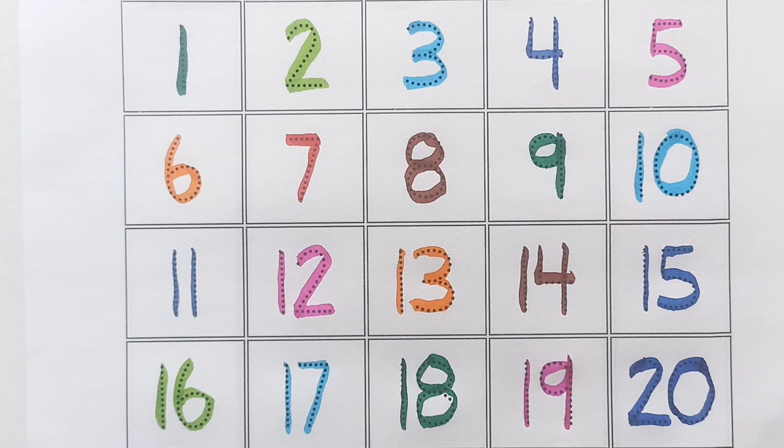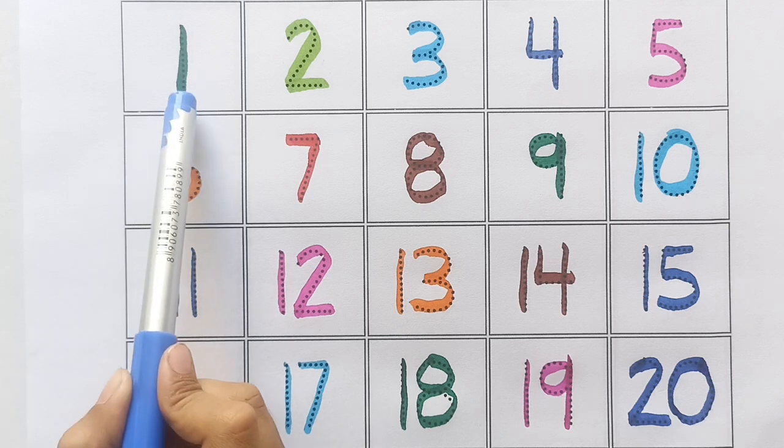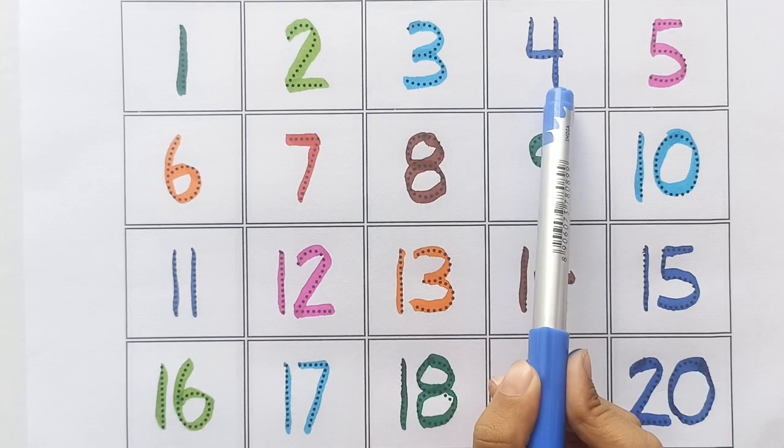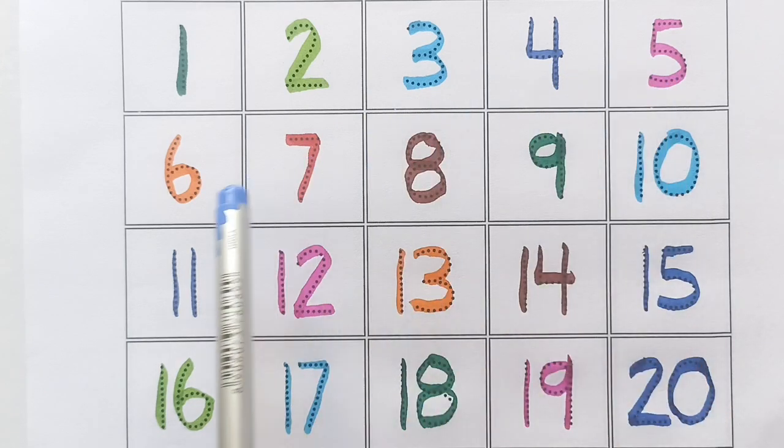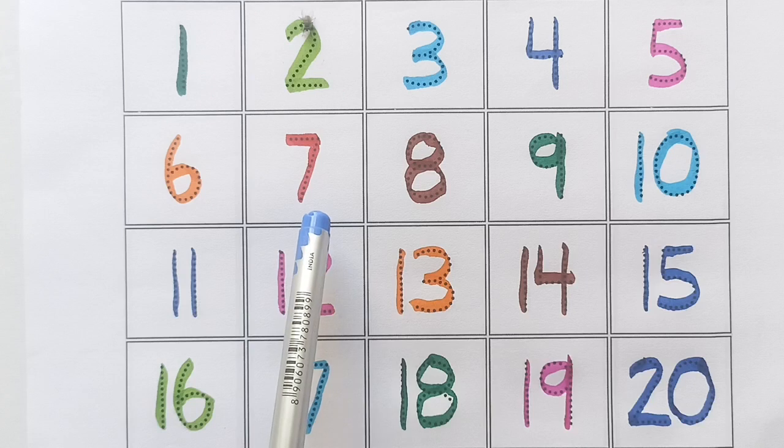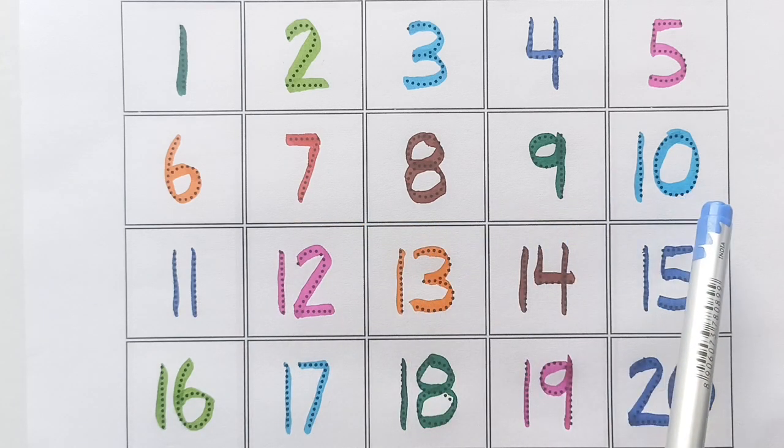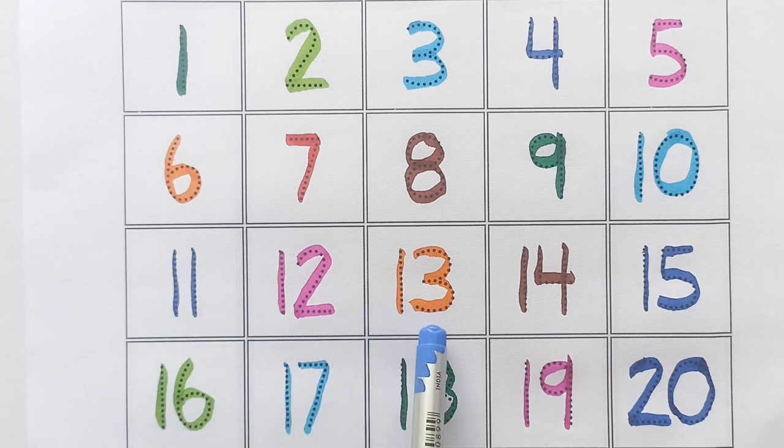Let's speak with me. One, two, three, four, five, six, seven, eight, nine, ten, eleven, twelve, thirteen, fourteen, fifteen, sixteen, seventeen, eighteen, nineteen and twenty.